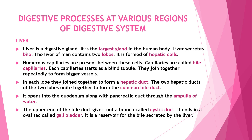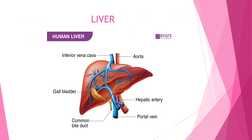This is a diagram of the liver. This is the gallbladder, and this is the common bile duct. Here is the hepatic duct. Bile is produced from the liver and then stored in the gallbladder.